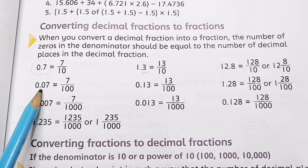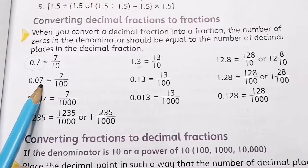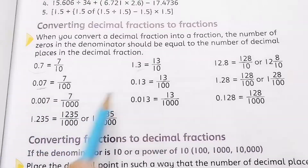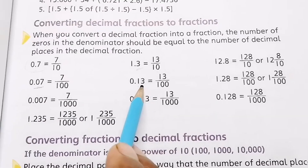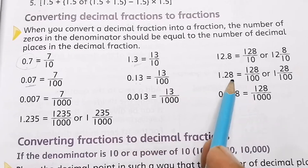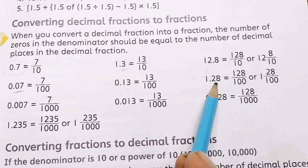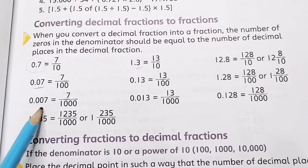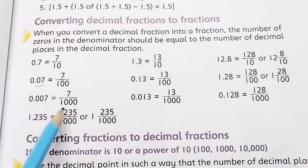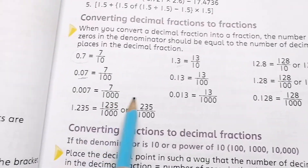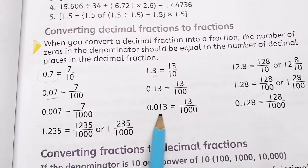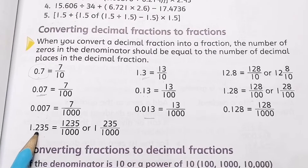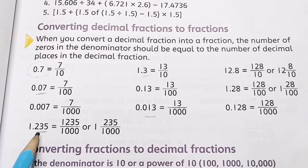For 0.07, there are two numbers on the right side, so we put 100 as denominator. For 0.13 and 1.28, there are also two numbers, so we write 100. If there are three numbers on the right side of the decimal, you put 1000. For example, 1.235 has three numbers on the right side, so you write 1000 as denominator.